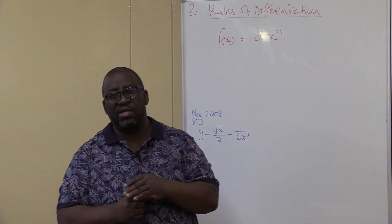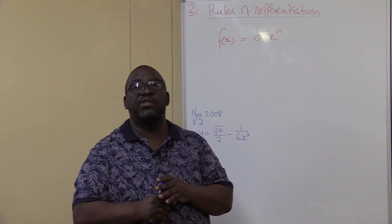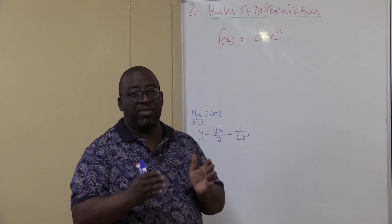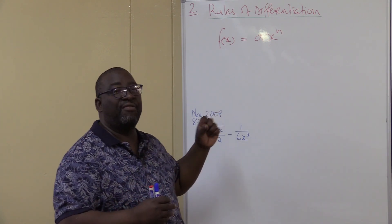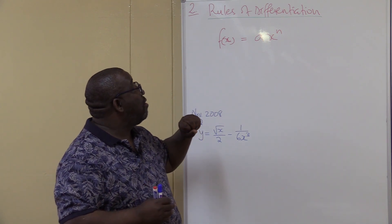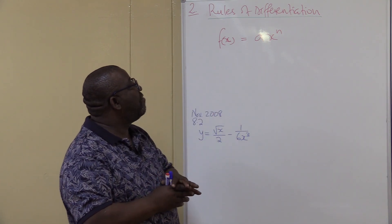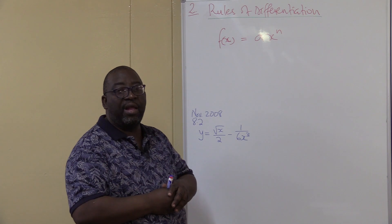The next part is called rules of differentiation. We differentiate by parts. Fortunately for us, there's only one rule that we use at this level.